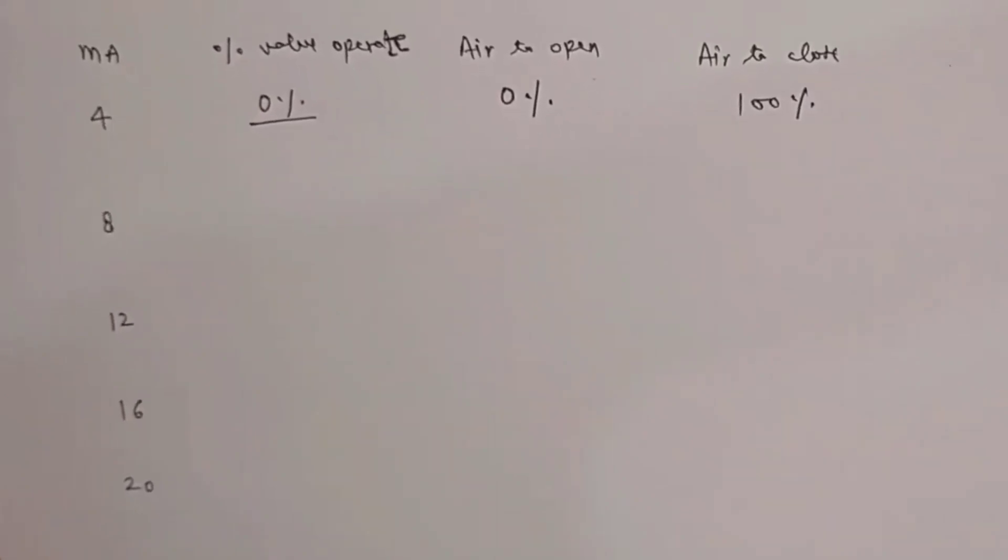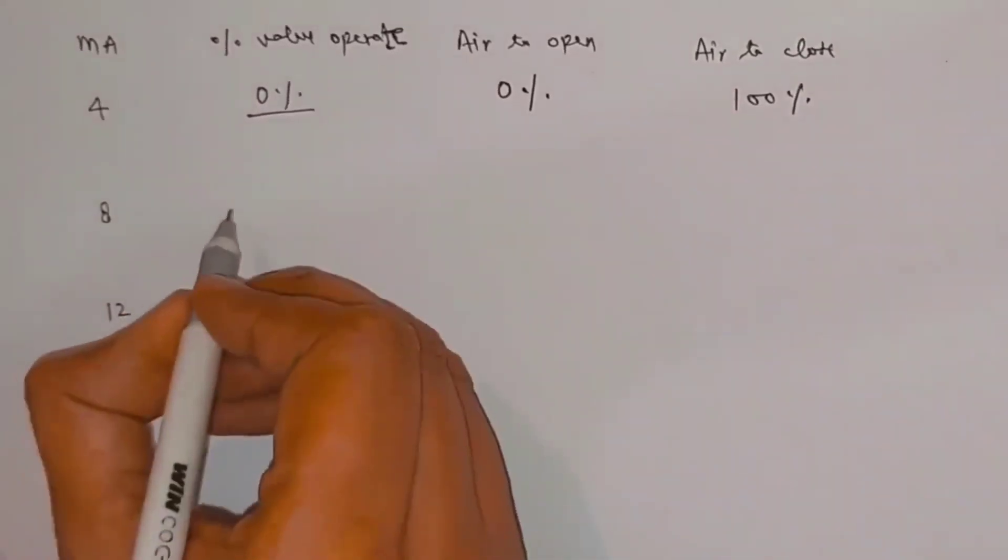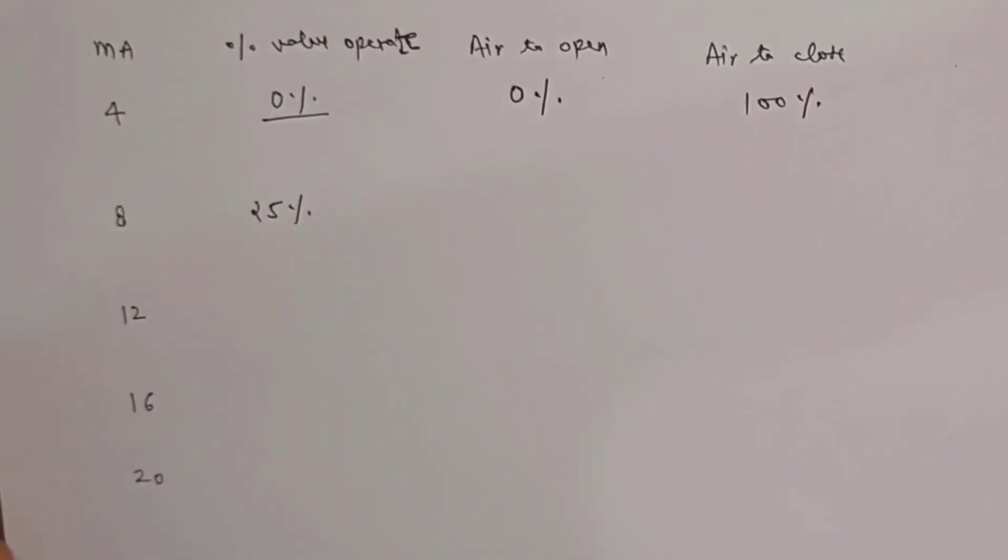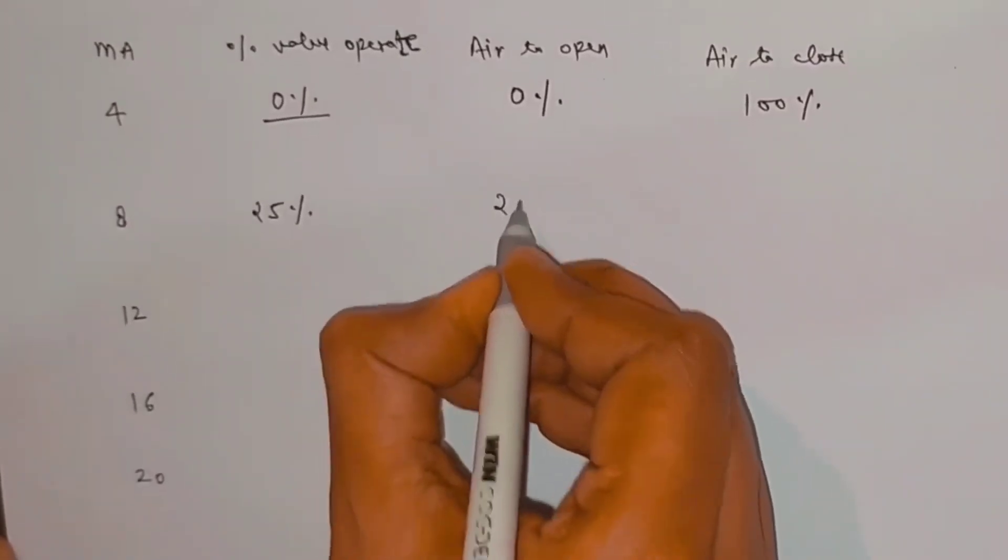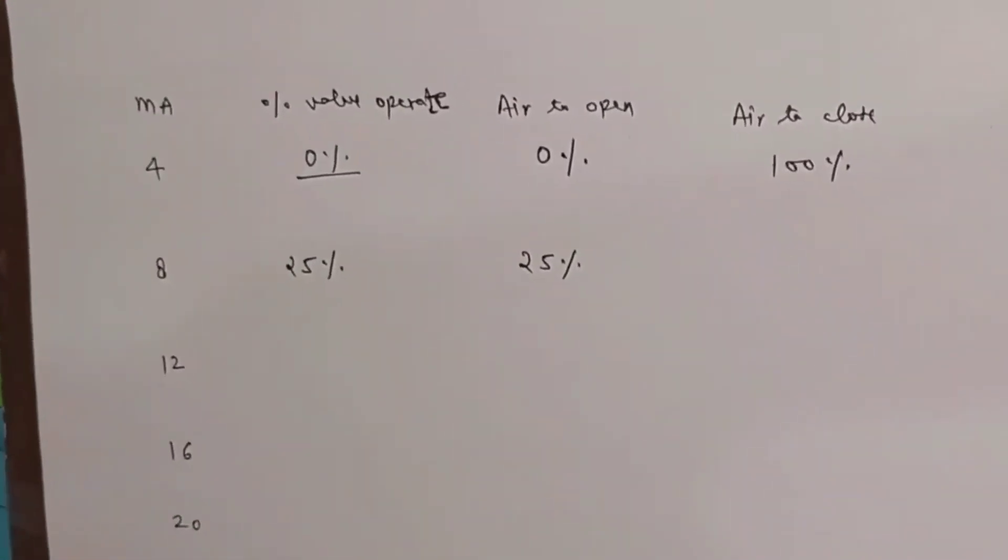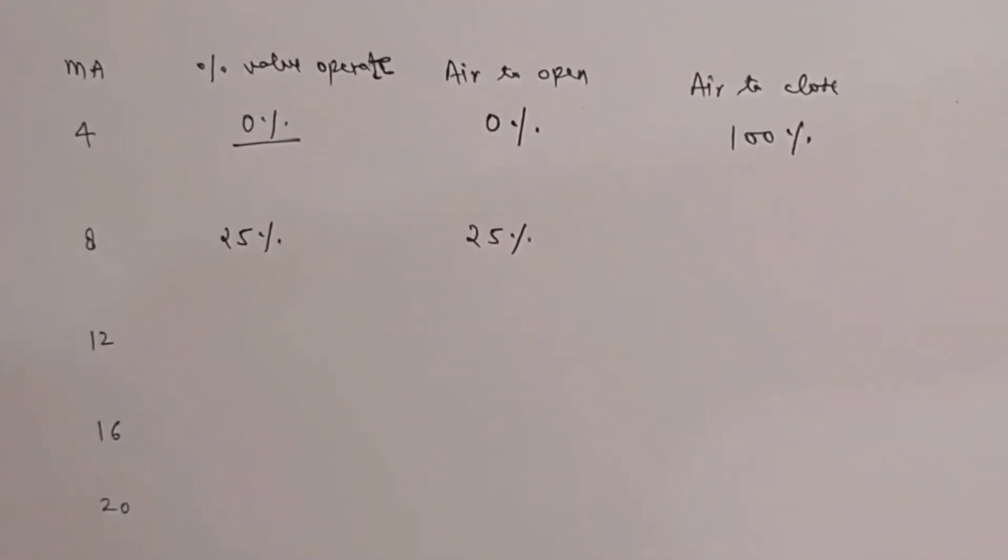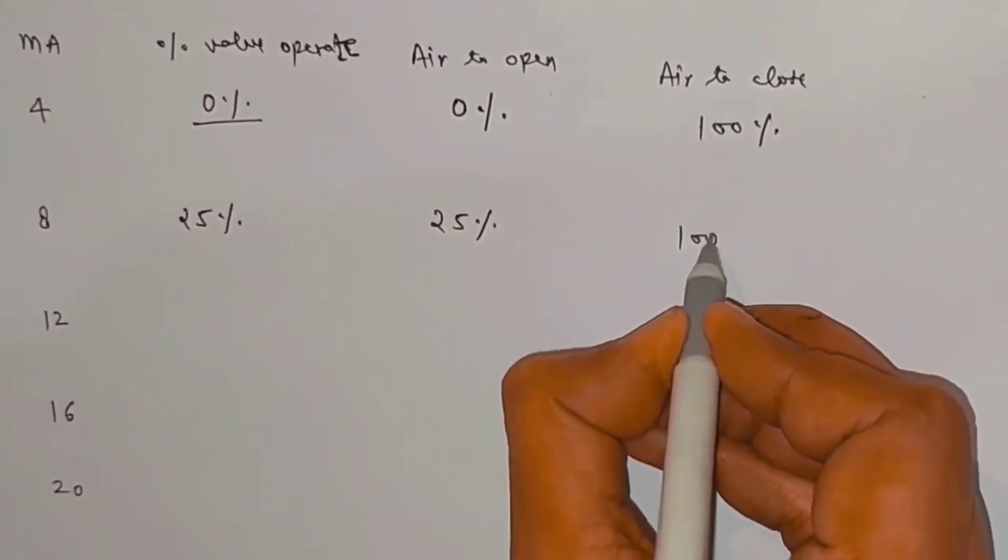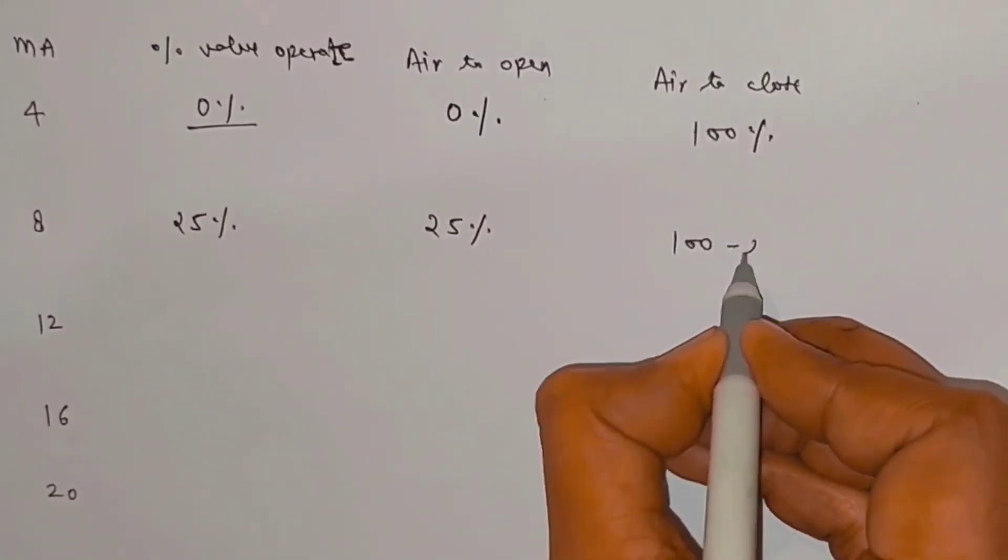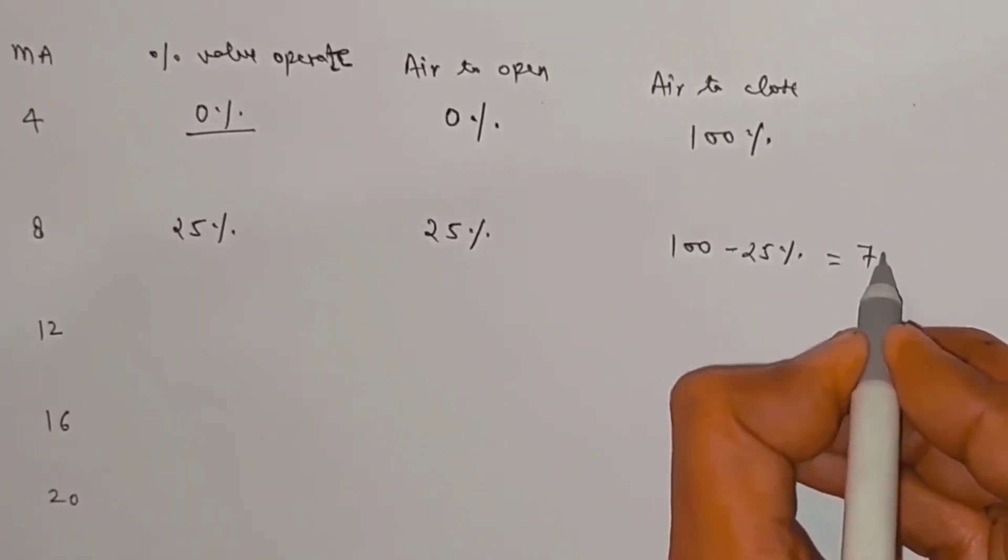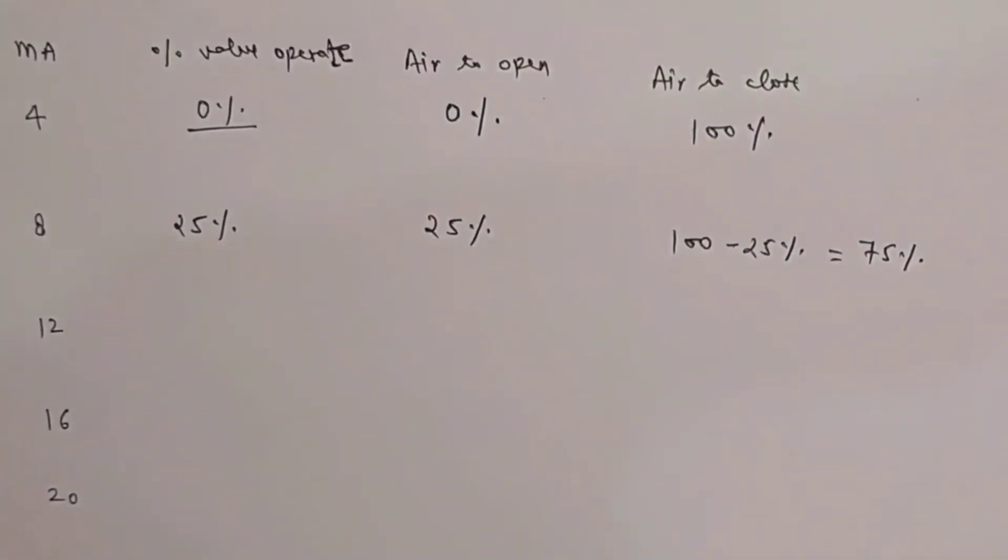Similarly, at 8 milliamp pairs signal, it will be 25%. Now the opening percentage of air to open control valve is 25%. Now how much will the air to close control valve operate? This will also operate 25%. So earlier it was 100%. If we subtract 25 from this, it will become 75%.